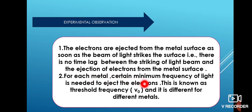For each metal, a certain minimum frequency of light is needed to eject the electrons. Every metal surface has a minimum frequency; if you provide less than that, electrons will not be emitted. That minimum energy is known as threshold frequency, and it is different for different metals. This threshold frequency is also known as the work function.